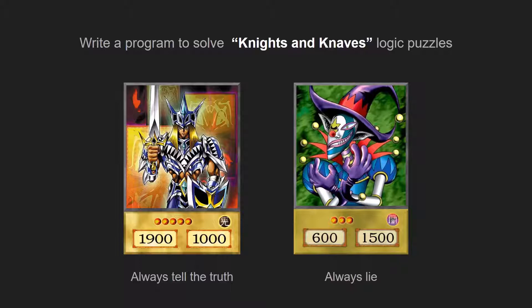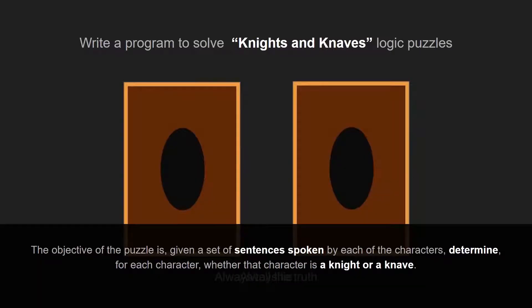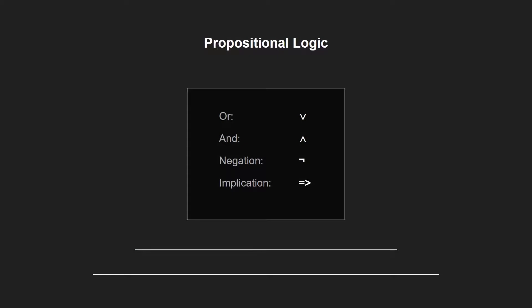The assignment was to write a program to solve Knights and Knaves logic puzzles. In these puzzles we have two kinds of characters: the first one is a Knight, who will always tell the truth, and the second one is the Knave, who always lies. The objective of the puzzle is, given a set of sentences by each of the characters, to determine for each character whether they are a Knight or a Knave. To do that, we implement propositional logic with the following operators: OR, negation, and implication.